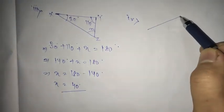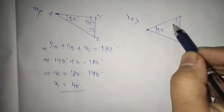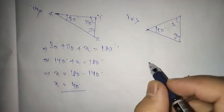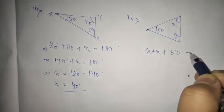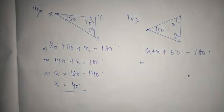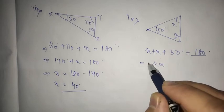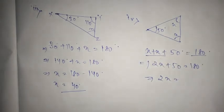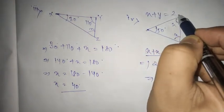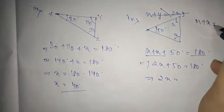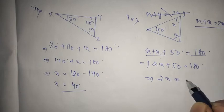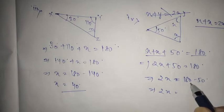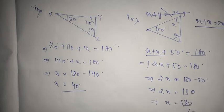Moving on to part four, you have this type of question: two interior angles are both x, so we write x plus x plus 50 is equal to 180 degrees. When you have the same variable, you can add them — so 2x plus 50 is equal to 180 degrees. 2x is equal to 180 minus 50, which is 130. So x is equal to 130 divided by 2, giving you x is equal to 65 degrees.